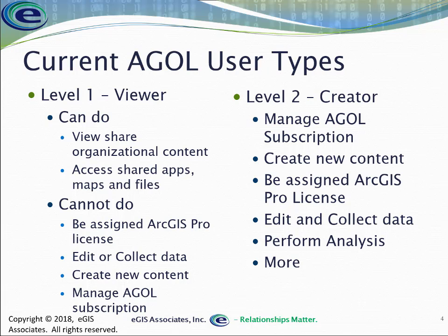Currently in ArcGIS Online there are two user types: Level 1 and Level 2. A Level 1 user is basically a viewer — somebody that can come in and view content shared through your organization, such as maps, applications, and files. What they can't do is use Collector to collect new data or edit existing data. They're not going to be able to use a web application to make changes to information, they can't manage your AGOL subscription, and you can't assign a Level 1 user an ArcGIS Pro license using the named user model. So it's a very limited capability.